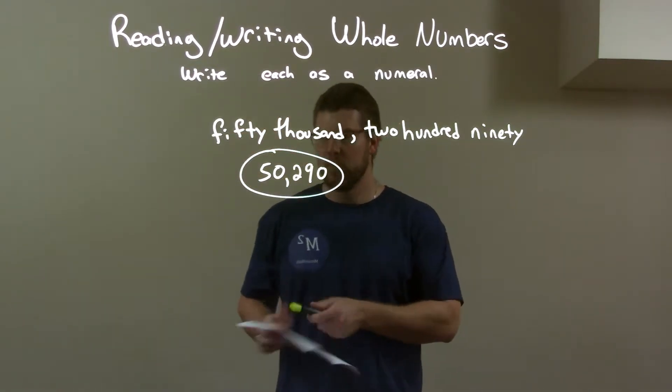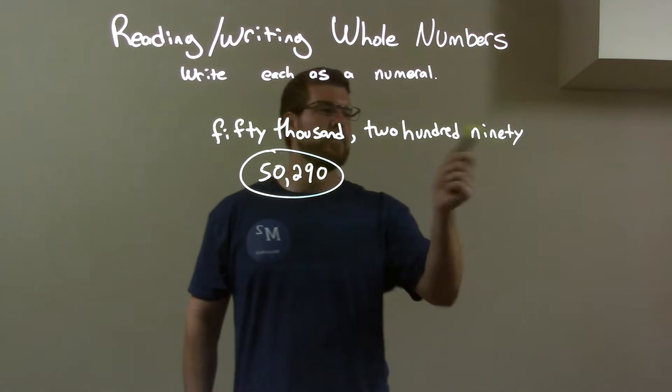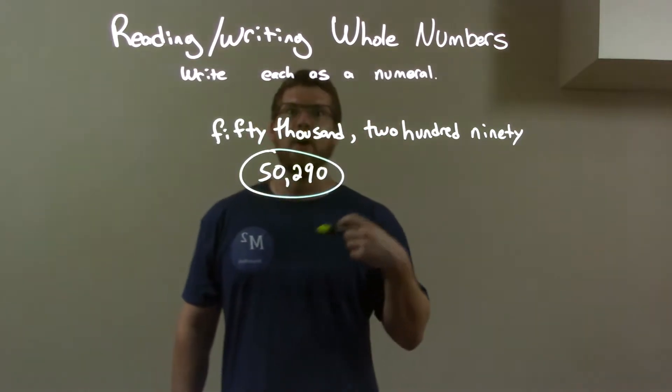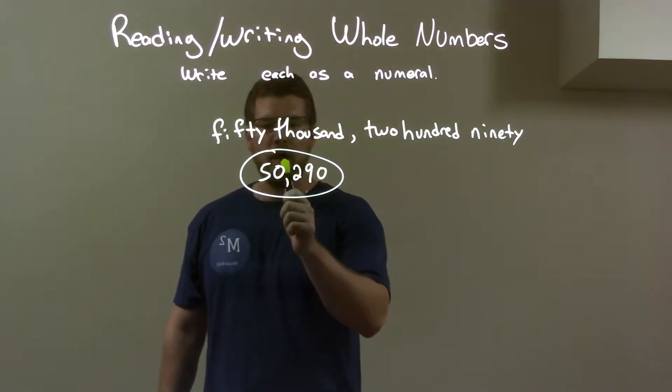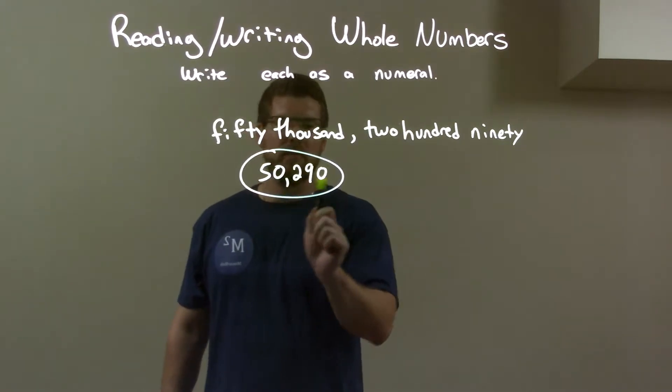So quick recap. We're given fifty thousand, two hundred ninety, and we had to write the numeral with that. Well, 50,000 right here with three spaces afterwards.